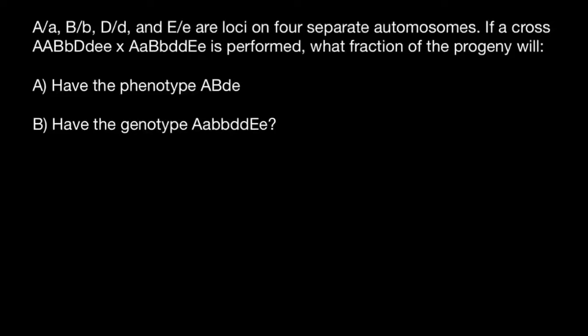Hello and welcome to Nicolai's Genetics Lessons. We have four loci — A, B, D, and E — on four separate autosomes. If a cross of the following genotypes is performed, what fraction of the progeny would belong to the following phenotype and to the following genotype?